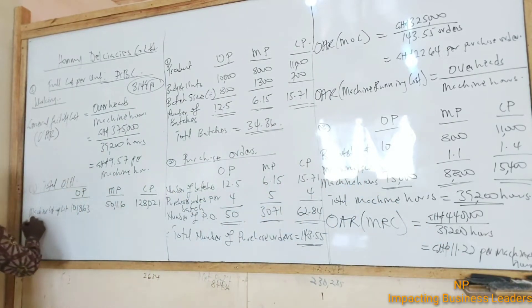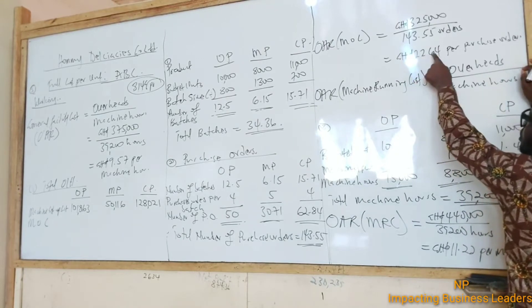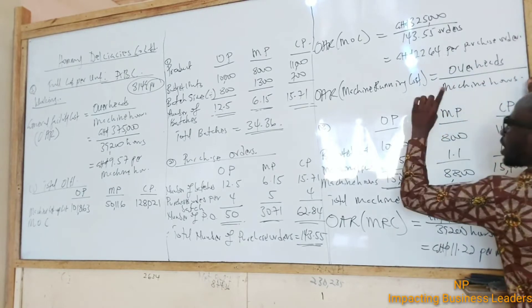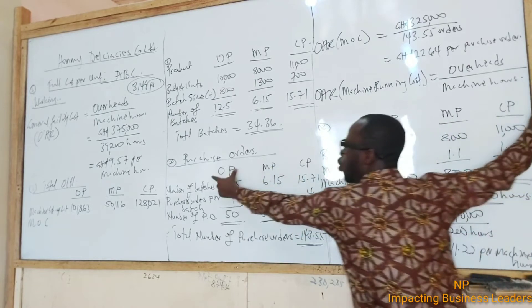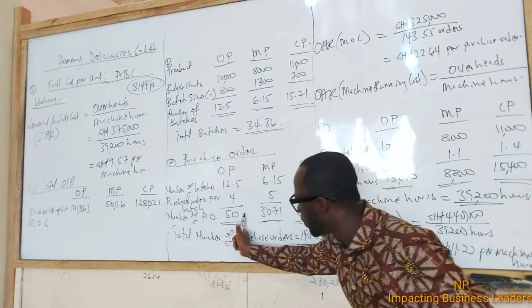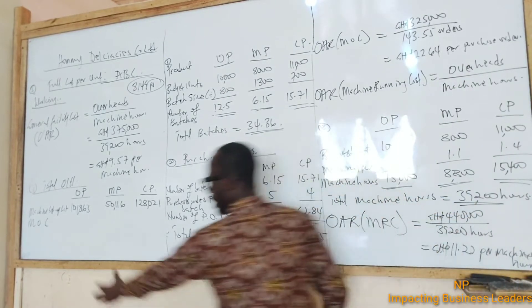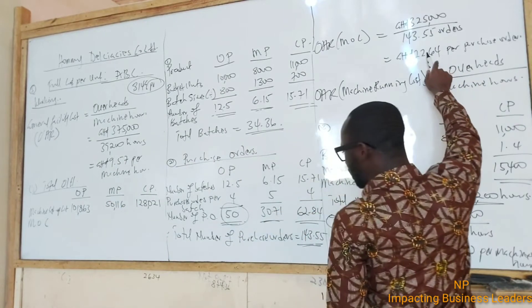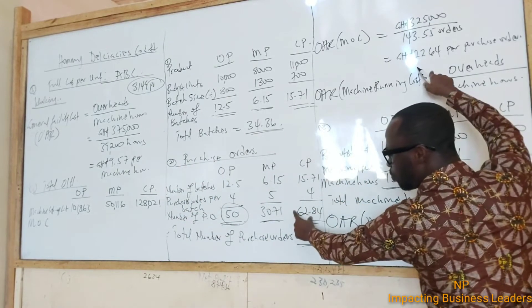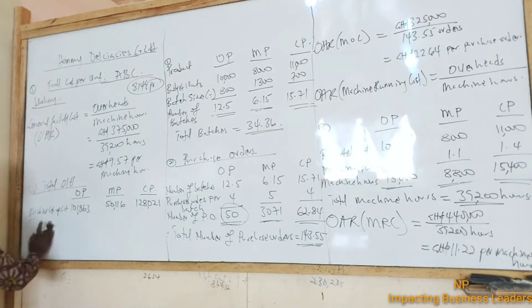Then we come to the second one: machine ordering cost. What was the rate for machine ordering cost? 2264 per purchase order. So the question is, how many purchase orders did OP do, did MP do, did CP do? OP did 50 purchase orders, so 2264 times 50 gives us OP. 2264 times 30.71 gives us MP. 2264 times 62.81 gives us CP. So let's multiply respectively and get the machine ordering cost.